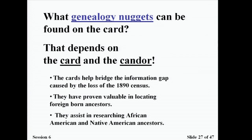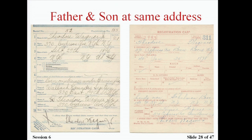Here is an example of a father and son at the same address, both with the same name. This is a great genealogy nugget because you have two generations in one household, and it shows what was going on with your family at that time. A lot of times we lose track of men born right after or just before one of the censuses, and cards like this help fill in those gaps.